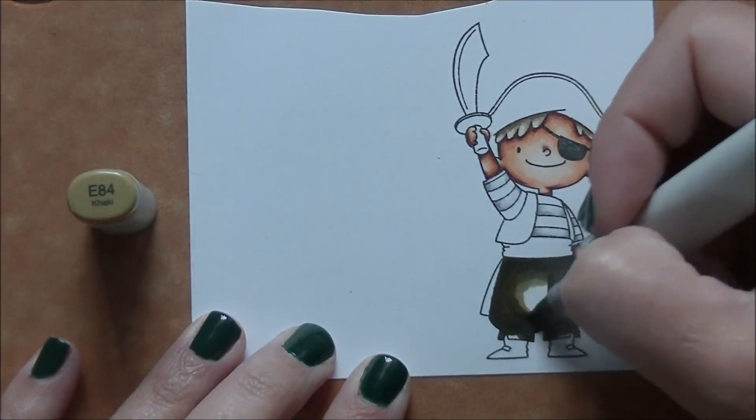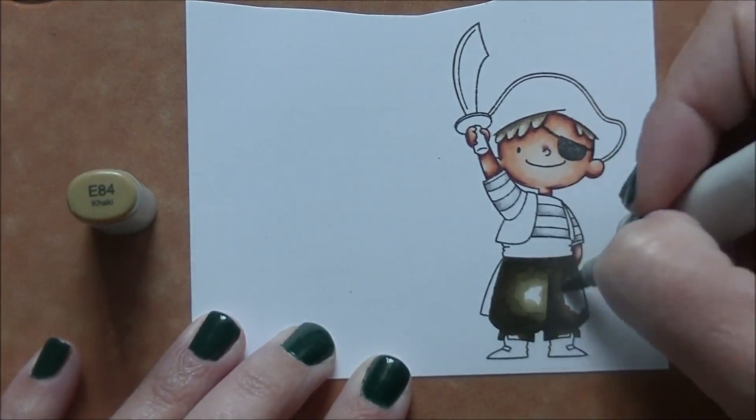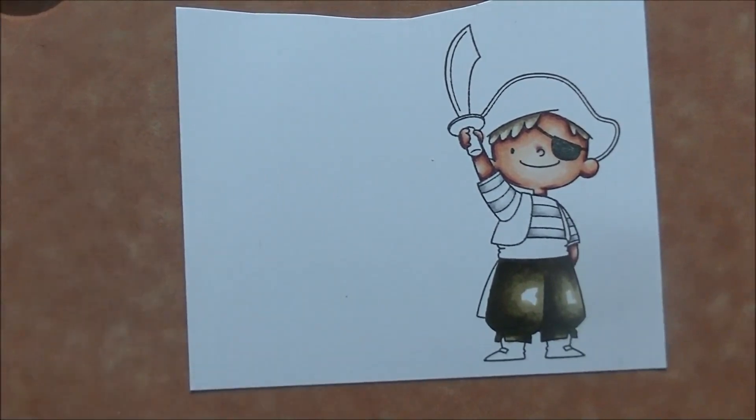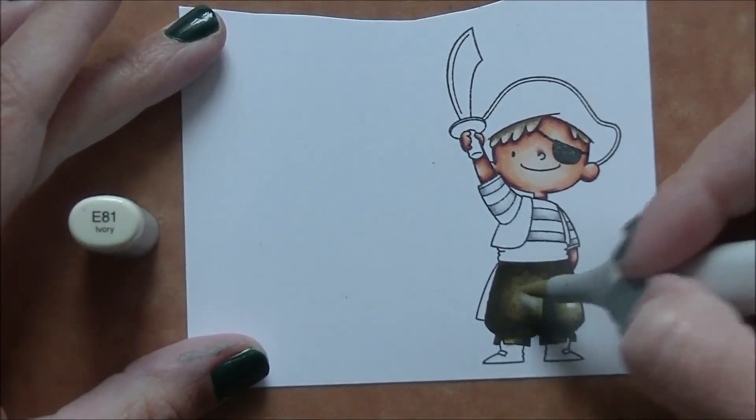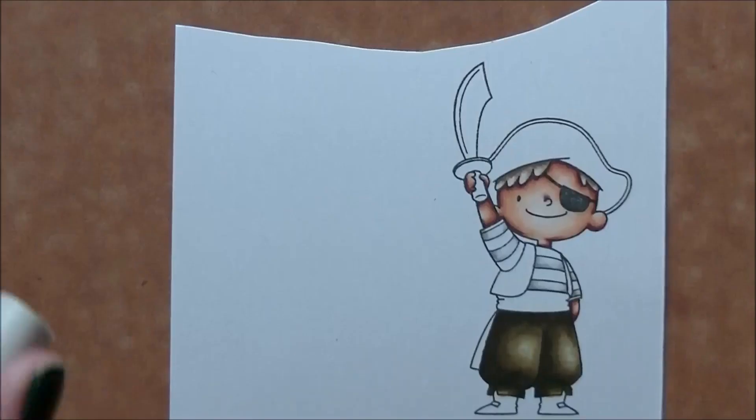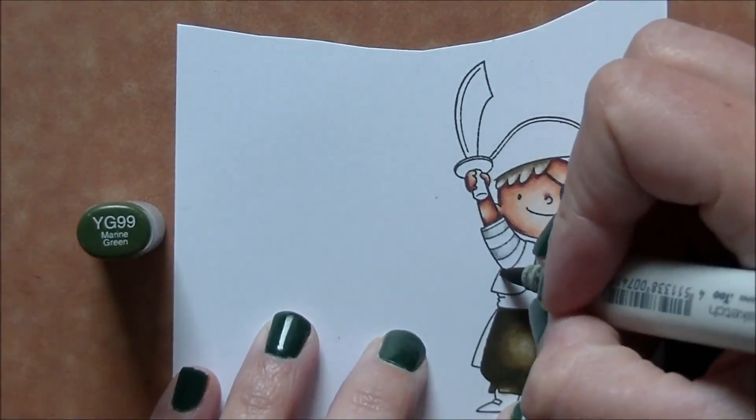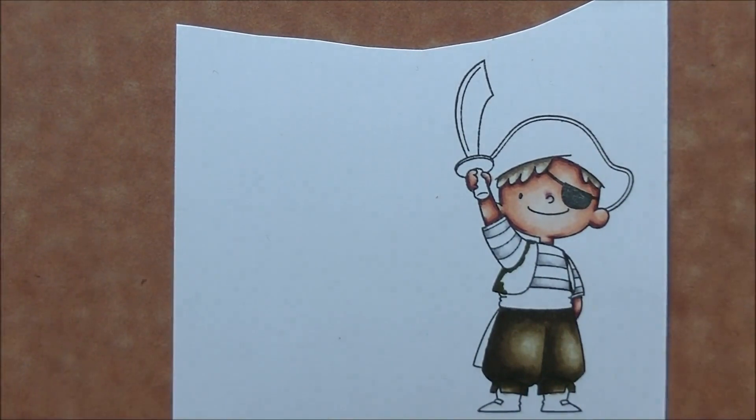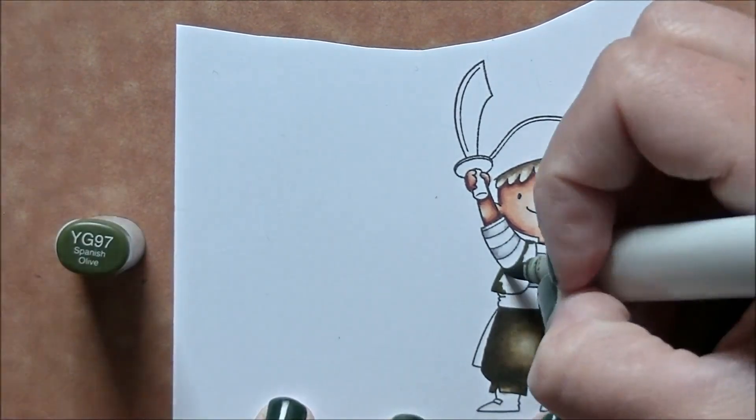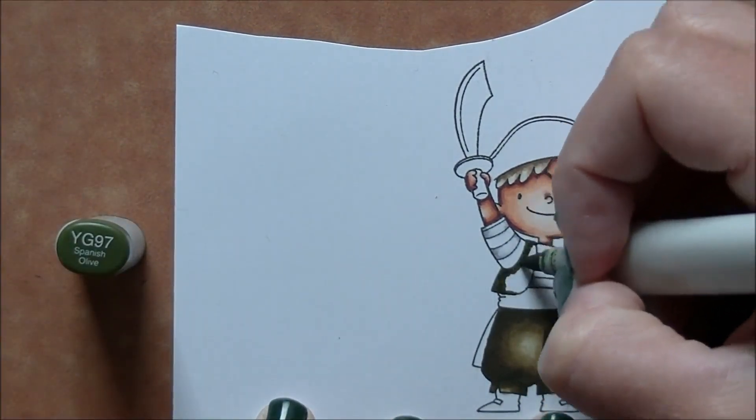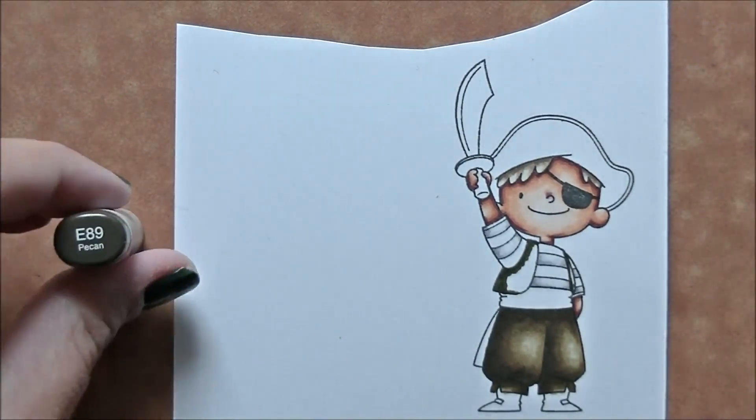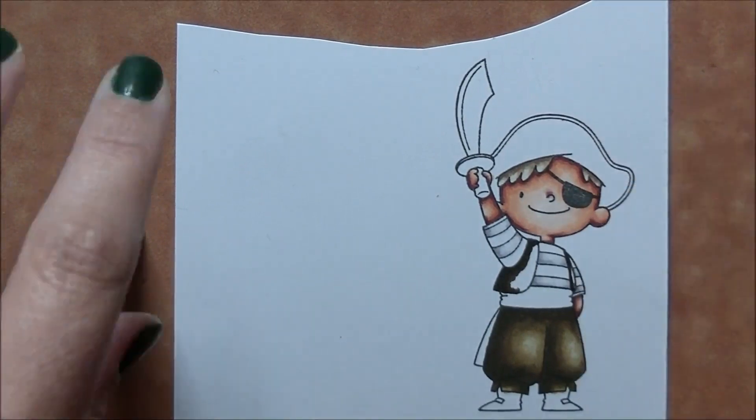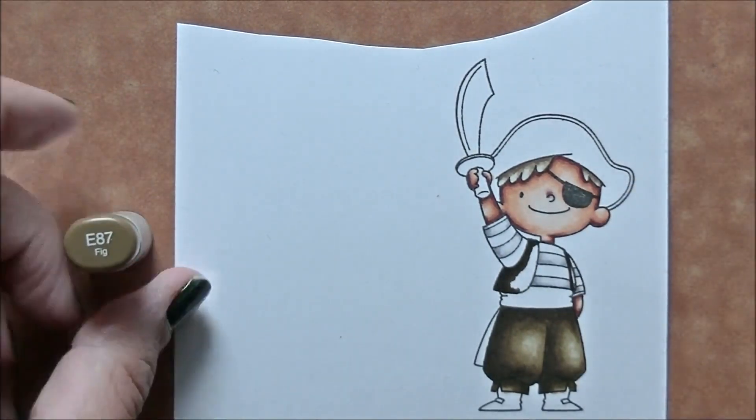So I'm going in with that E87 and then the E84 and E81 to finish it off. And I do work in smaller sections here. I probably could have done the vest at the same time, but I wasn't entirely sure what parts of the images were going to be colored what. So I tended to just pick a thing like his pants and then go on to the next. So now I'm onto the vest. And again, we're just following the exact same color order that we did the previous time.